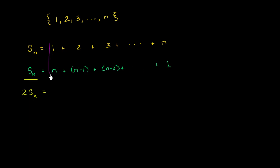You have a one plus an n, which is just going to be n plus one. You have a two plus n minus one, which is, well, two plus n minus one is going to be n plus one again, plus n plus one. You have a three plus n minus two. Well, that's going to be n plus one again, n plus one. I think you see what is going on here.